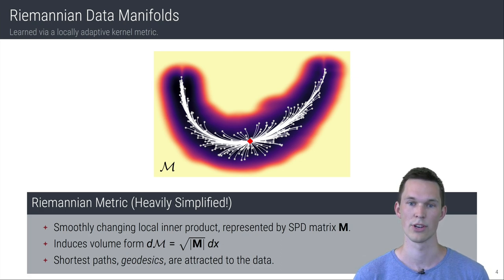Shortest paths, so-called geodesics, are consequently attracted to follow the data. In the figure, darker color means smaller volume and thus shorter distances.